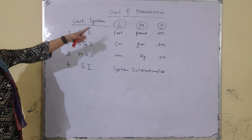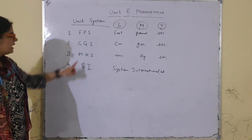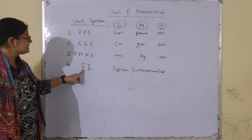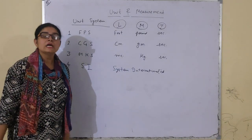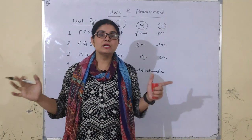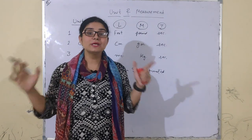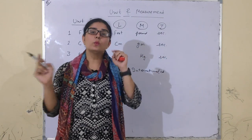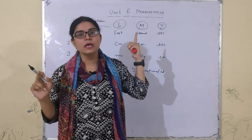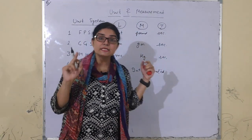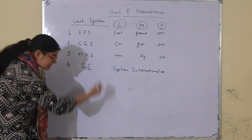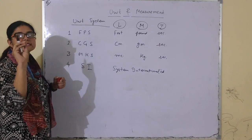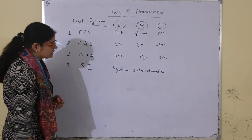SI system kya cheez hota hai? System International is that system of unit which is internationally accepted — worldwide yahi system chalta hai. Worldwide kaun sa system chalta hai? SI system. SI system mein 7 basic aur 2 supplementary units hoti hain.